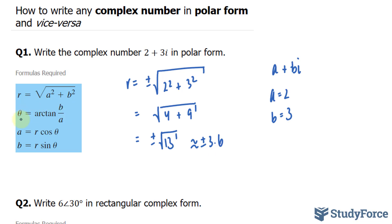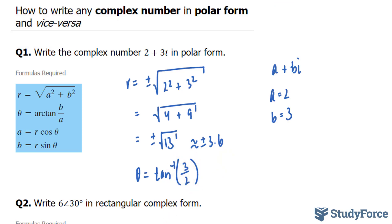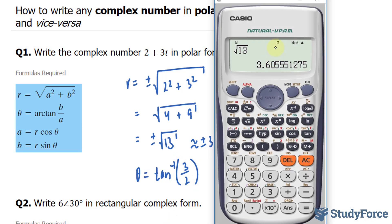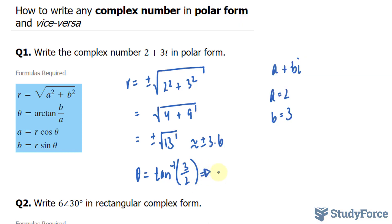I'll use the next formula to find theta. Arc tan represents inverse tangent, so theta is equal to the inverse tangent of my b value over a, which is 3 over 2. Using my calculator in degrees — switching from radians to degrees for a better visual — tangent inverse of 3 over 2 gives me approximately 56.3 degrees.